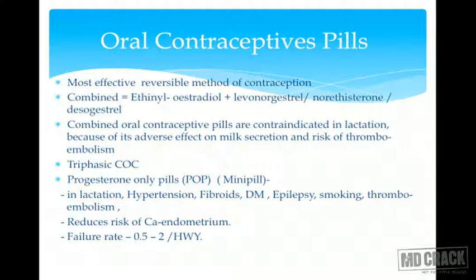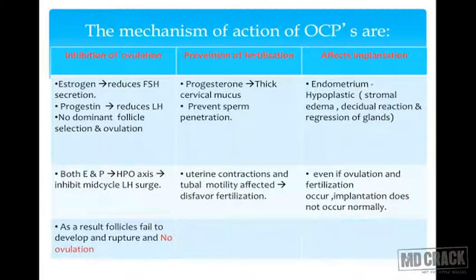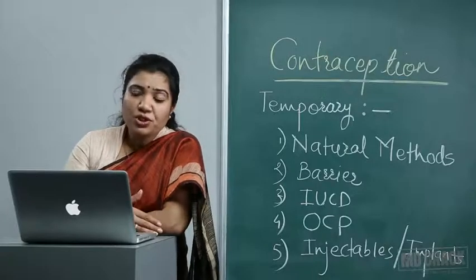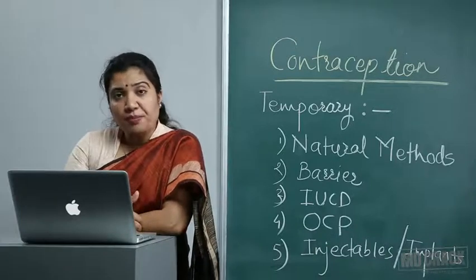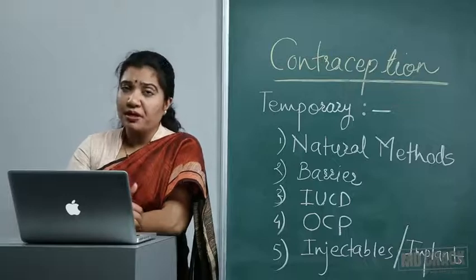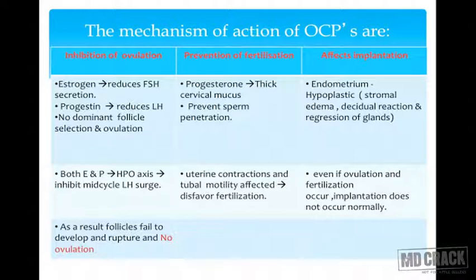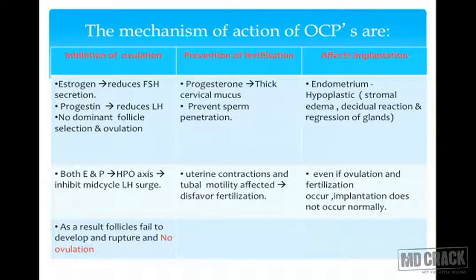Regarding OCP mechanisms — MCQs may ask whether they prevent ovulation, fertilization, implantation, or all of the above. Prevention of ovulation: progesterone reduces the frequency of LH secretory pulses while estrogen primarily reduces FSH secretion. They synergistically inhibit the mid-cycle surge, so the follicle fails to develop and there is no rupture, leading to no ovulation.